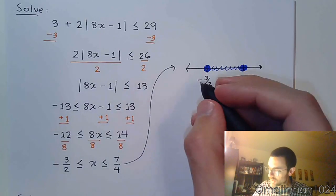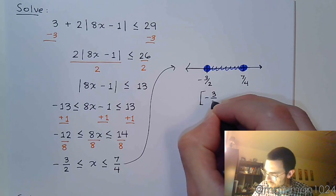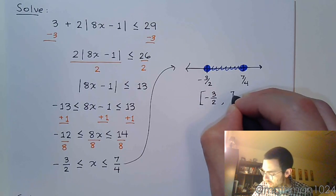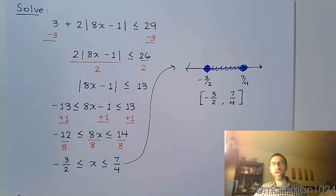which means our interval notation is going to be bracket from negative 3 halves to 7 fourths with a bracket.